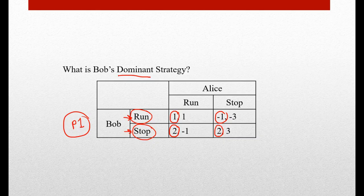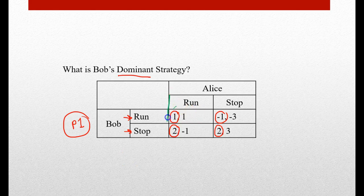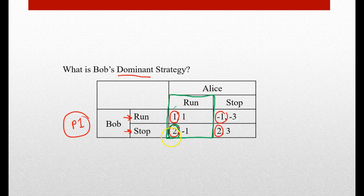Now we're trying to figure out the dominant strategy — should Bob always choose to run or always choose to stop? So how do we decide? Let's keep Alice's strategy the same each time and see what happens if Alice chooses to run. What should Bob choose — run or stop? Remember, the higher the number, the better the payoffs. We have one and two, so it appears that we should choose to stop.